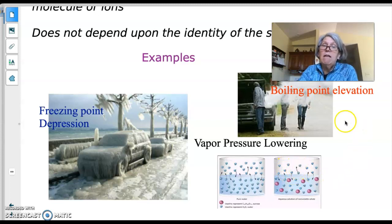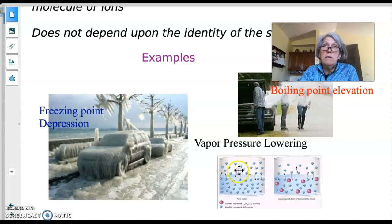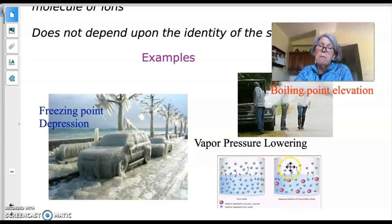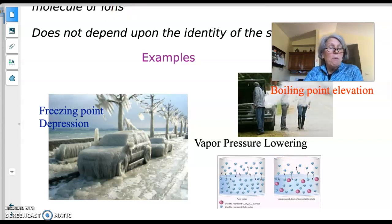Vapor pressure lowering is a colligative property and the reason why the boiling point must increase. Boiling occurs when vapor pressure equals atmospheric pressure. Since the solute lowers vapor pressure, you need to add more energy — a higher temperature — to get enough water vapor molecules into the headspace to match atmospheric pressure.